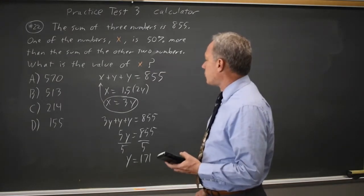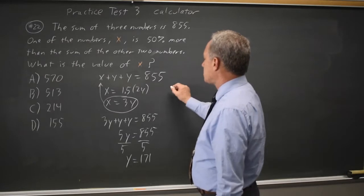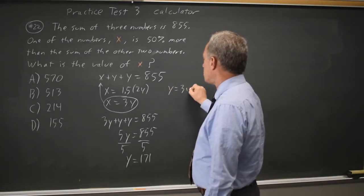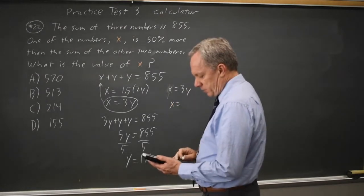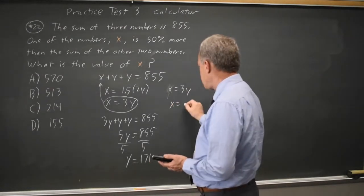Now that I have y, I know that x equals 3y, so x equals 3 times 171 is 513.